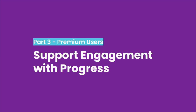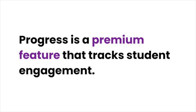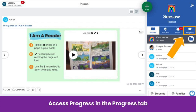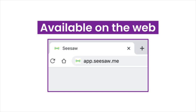As students complete Seesaw activities, premium users can track and support student engagement with the progress activities view. Progress is a premium feature for Seesaw Plus and Seesaw for Schools users that helps teachers track student engagement with Seesaw activities. Access progress in the progress tab — it's here on the right next to the inbox tab. Progress is only available on the web at this time; it's not viewable from the class app on mobile devices.